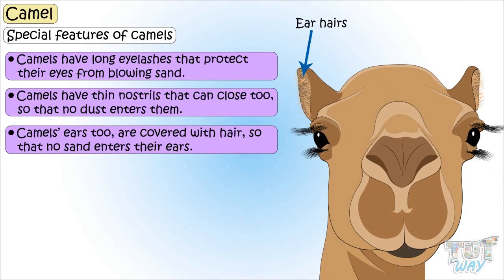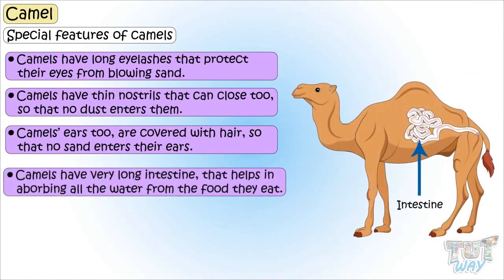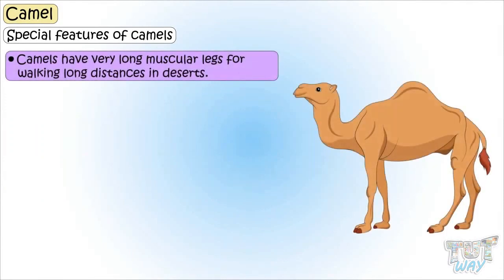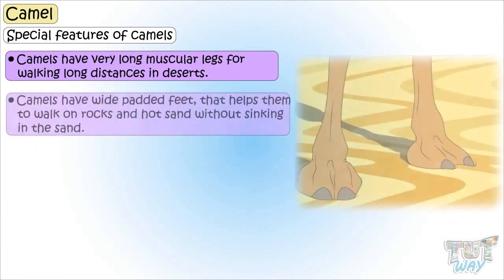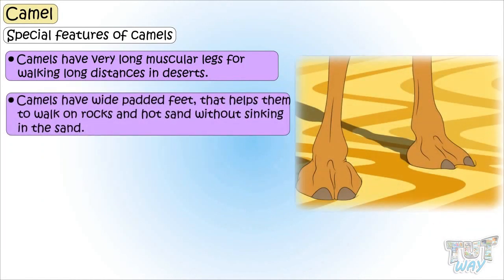Camels have very long intestines that help in absorbing all water from the food they eat. Camels have very long muscular legs for traveling long distances. Camels have wide padded feet that help them walk on rocks and hot sand without sinking, and this is why the camel is known as the Ship of the Desert.